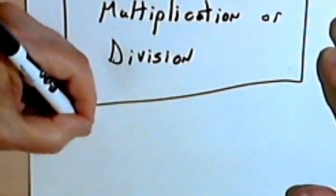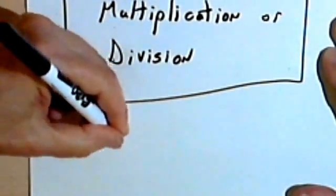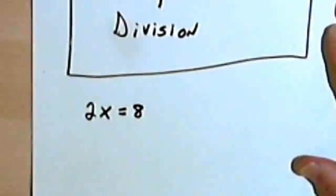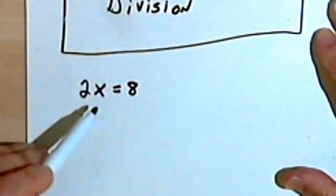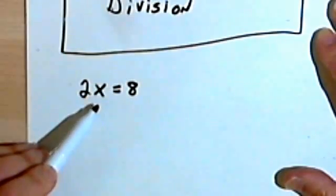Let's see if you've got a problem like 2x equals 8. We want to find out what the x is. So that means we have to isolate the x, we have to get it by itself.